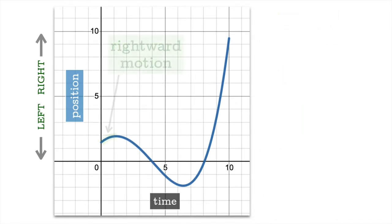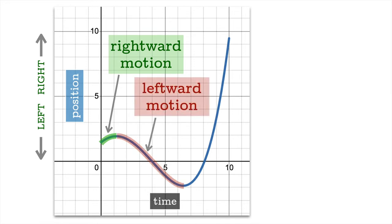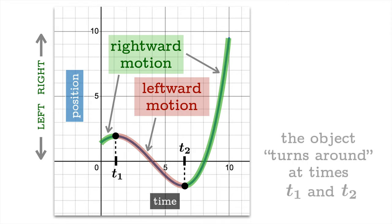So first of all you should have noticed that for parts of the graph the particle is moving rightward and for another part of the graph the particle is moving leftward, and then there were two moments, sort of transitional moments, where the particle switched from moving rightward to leftward and then leftward to rightward. So we can say the object turns around at times t1 and t2.